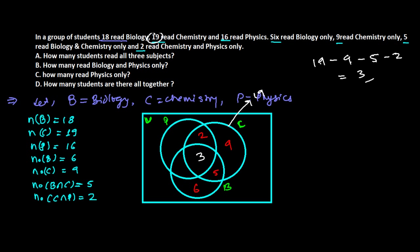With the center value of 3 known, we can now complete the biology circle. Total biology learners are 18. We have already placed 6 (biology only), 5 (biology and chemistry only), and 3 (all three). So 18 minus 6 minus 5 minus 3 equals 4. There are 4 students who learn biology and physics only.